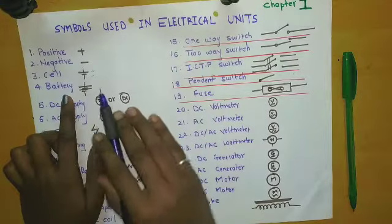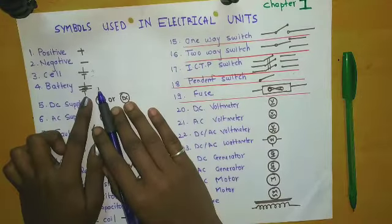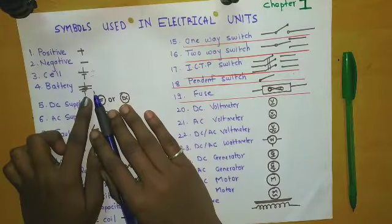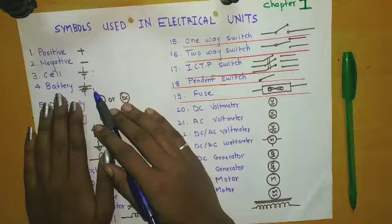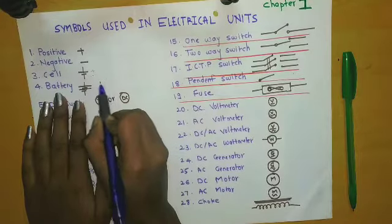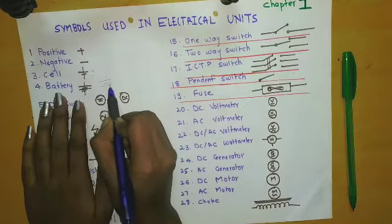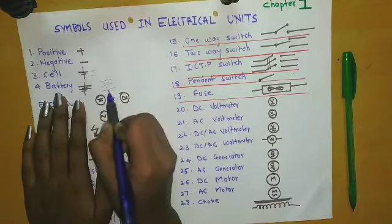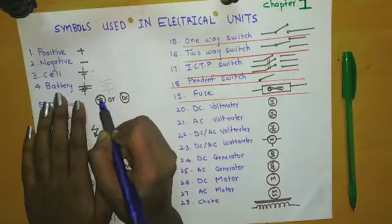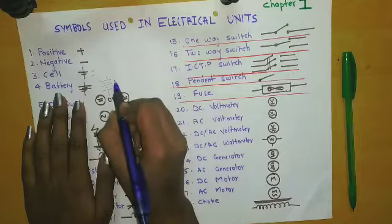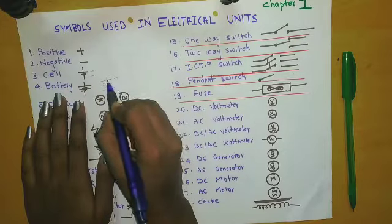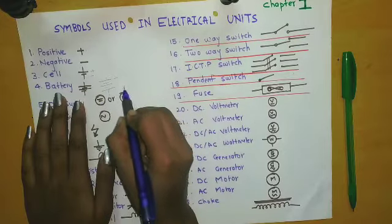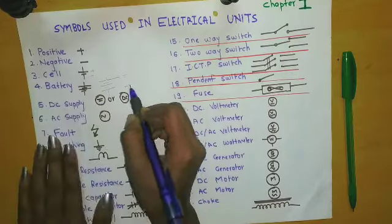Battery. A battery is nothing but a group of cells. Its symbol looks like this — a group of cells — and it also has a positive terminal and a negative terminal.